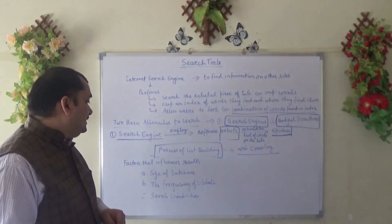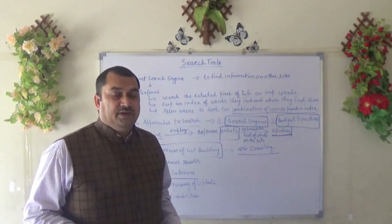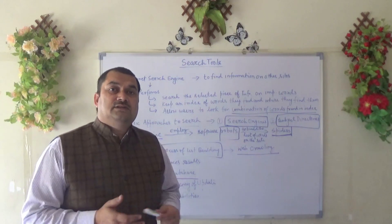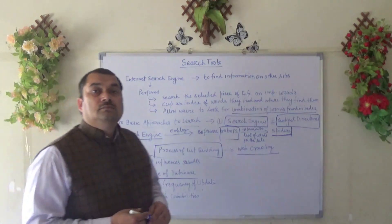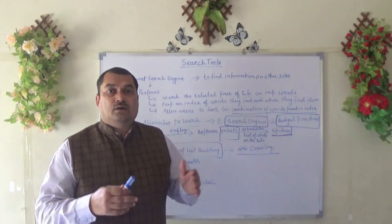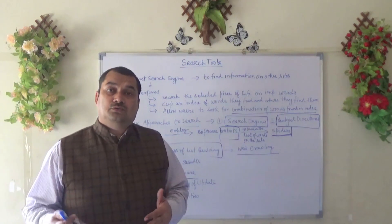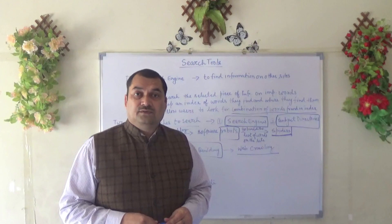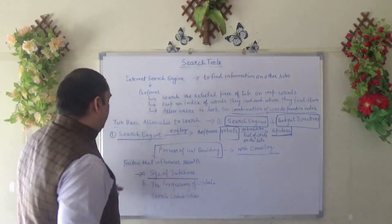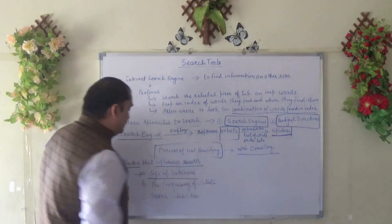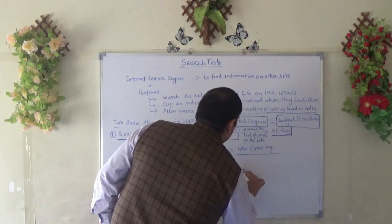What are the factors that influence the results? The first one is the size of the database. There are thousands of search engines and websites where we can throw keywords and get results based on our input. It depends on the database — if we talk about Google, it has a very vast area of information. There are also some meta search engines which combine two or three search engines together and collect information from each.